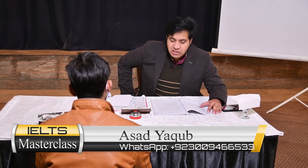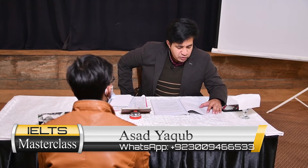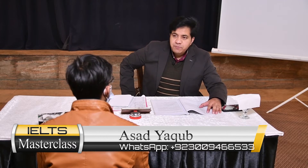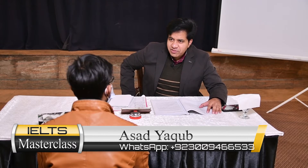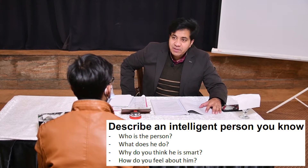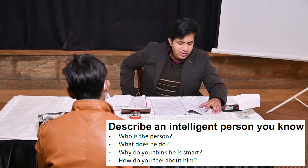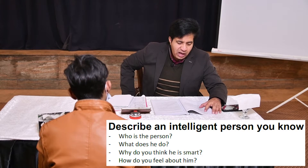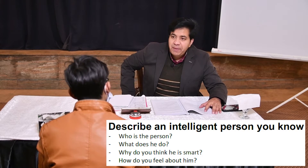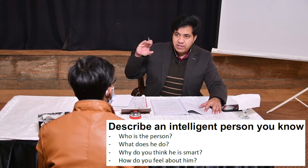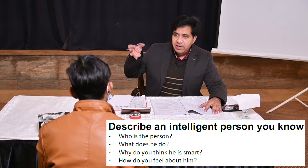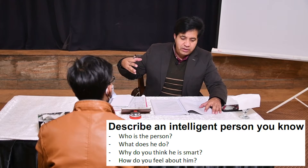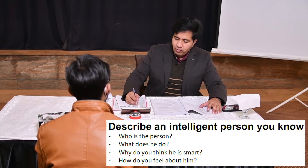We move on to IELTS speaking part 2 and your topic is: describe an intelligent person you know. Do you know an intelligent person? Good. Who is the person? What does he do? Why do you think he is smart? How do you feel about him? All the cue card is in present tense, so you will use present simple and other present tenses to elaborate on that. Please, you can start now.